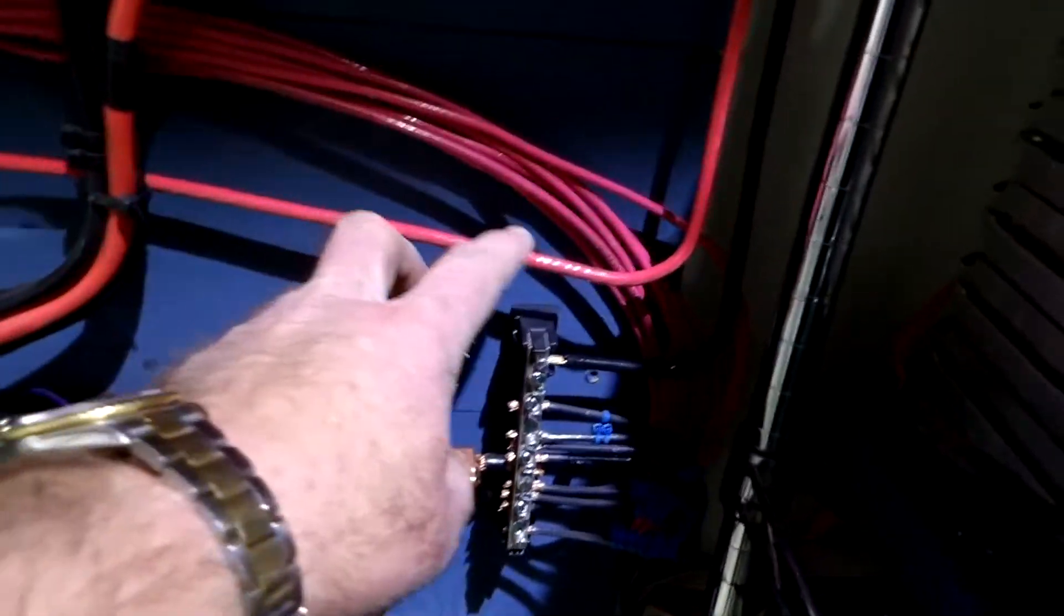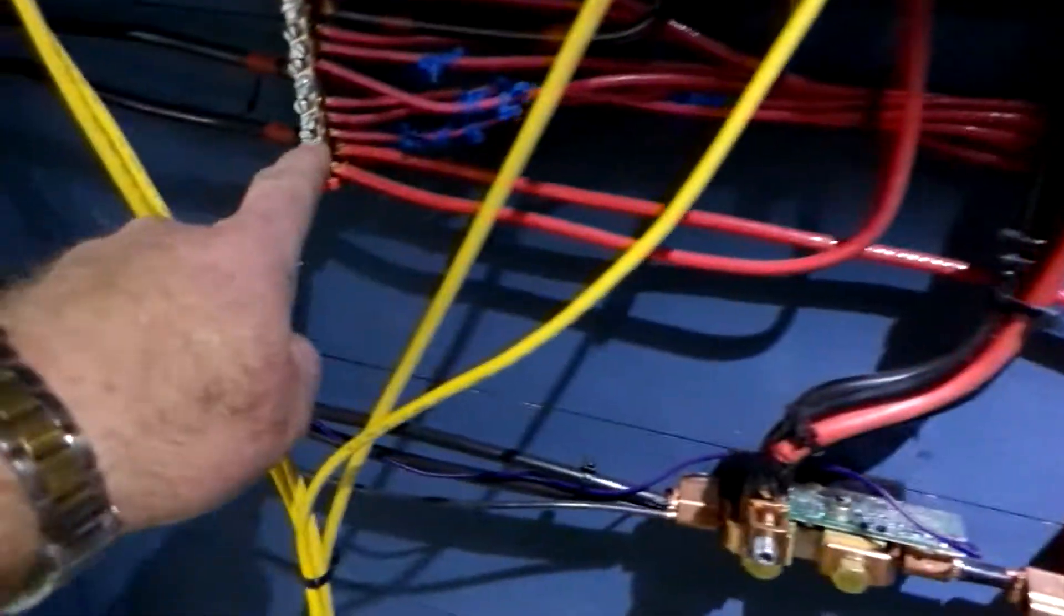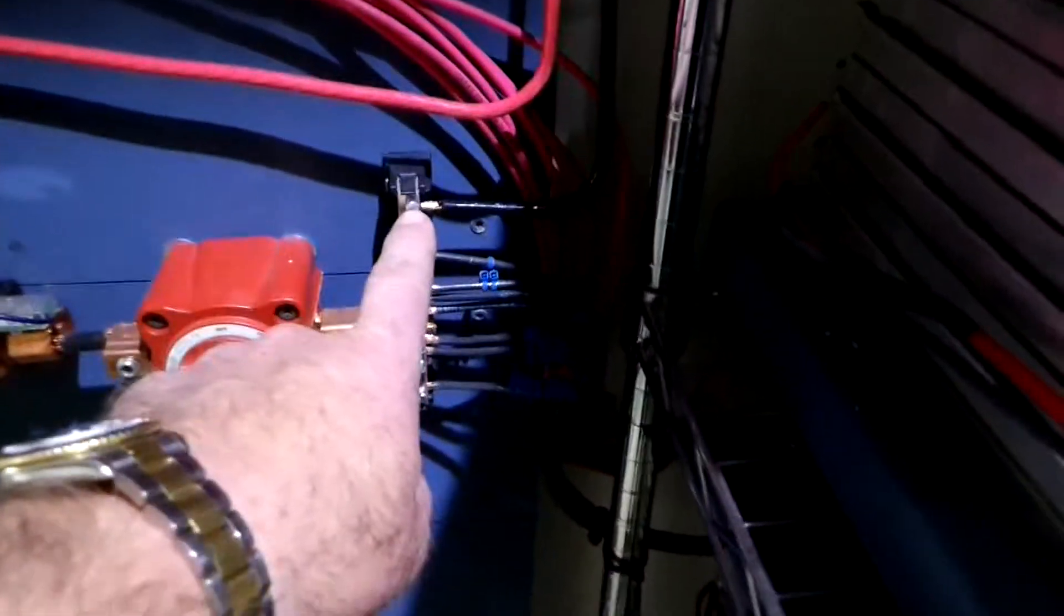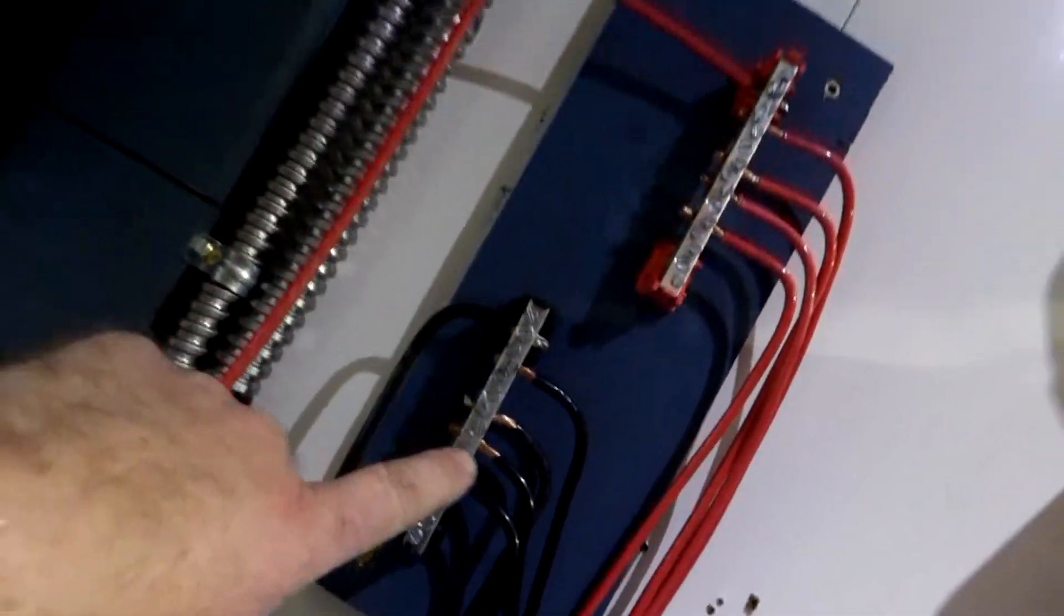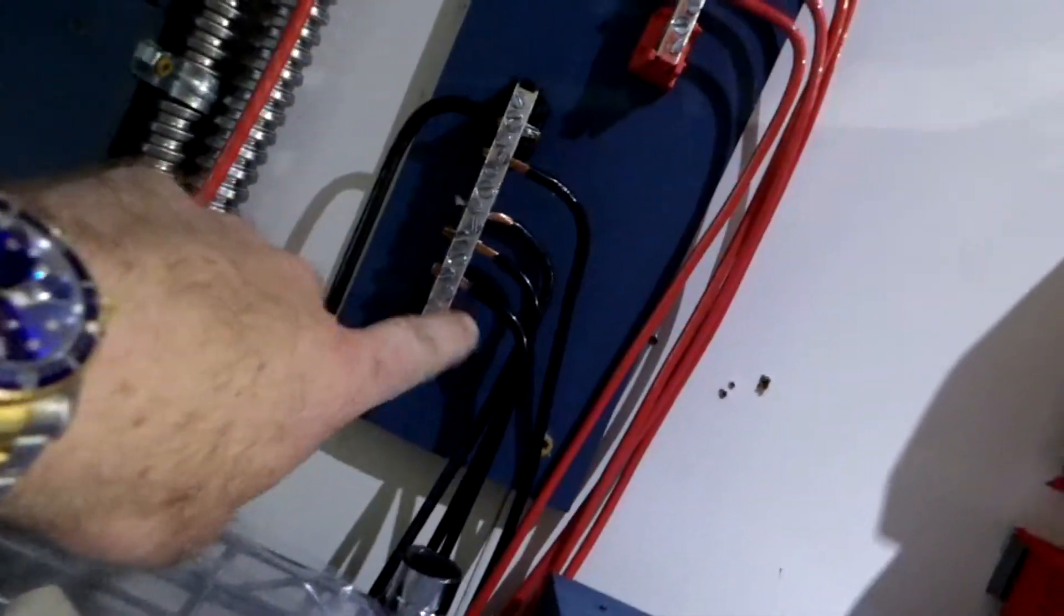I've added this number four wire coming off the bus bar and a number four wire coming off the negative bus bar. They come over and go to two new bus bars. Each of these bus bars have four positives and four negatives.